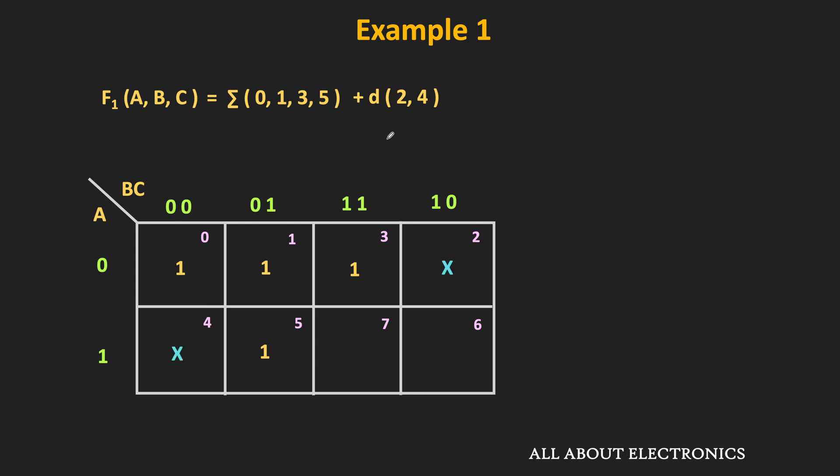During the minimization, we should cover all the ones in the Kmap. We can use these don't care terms for further simplification, but their usage is optional. If using the don't care terms gives further simplification of the boolean function, then we should use them. First, let us find the minimal solution without using the don't care terms, and then I will show you that using the don't care terms we can further simplify this boolean expression.